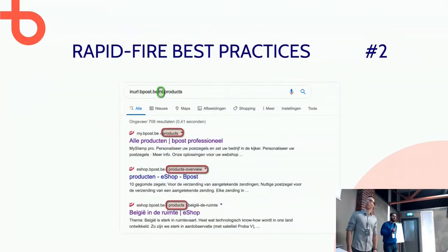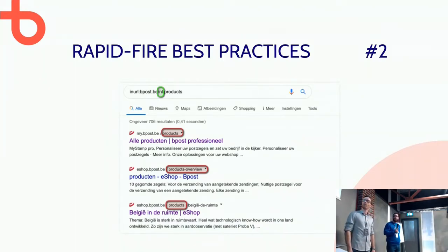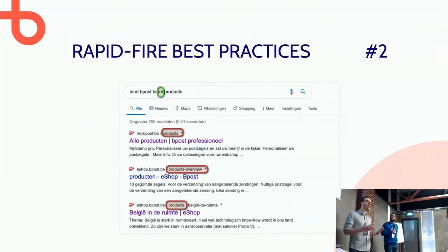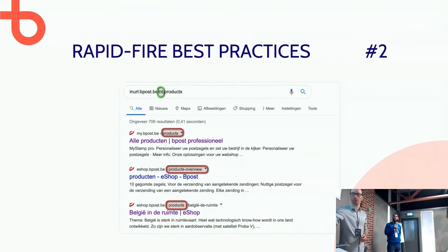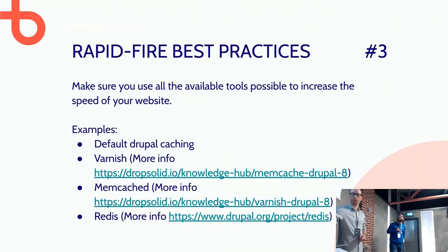Here we have the translation issue. In this screenshot we're on the Dutch website (slash NL), but some pages contain English words in the URL. It's not Dutch — it should be translated as well. Of course it's easier not to translate it, but it's our job to make the website as good as possible SEO-wise.